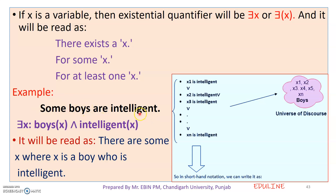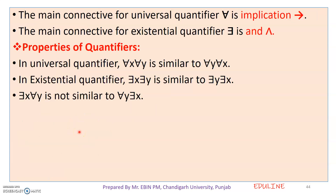Here is an example: 'Some boys are intelligent.' Since this uses 'some,' we use the existential quantifier. The representation reads: 'there are some x where x is a boy who is intelligent.' For the existential quantifier, we use the connective 'and' — not implication.